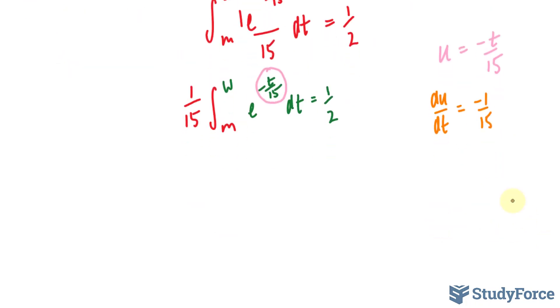I'll solve for dt. That's not hard to do. I end up with negative 15 du equals dt. I'll replace dt with negative 15 du and replace the exponent with u.